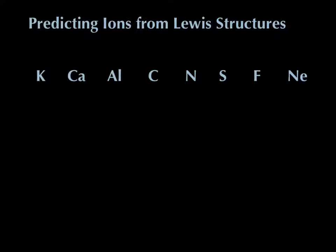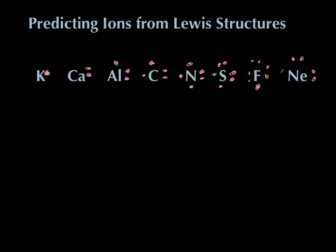Grab a periodic table, hit pause, and draw the Lewis dot structures for each of these elements. Here are the answers: potassium has one dot, calcium has two dots, aluminum in the p block has three dots, carbon has four dots, nitrogen has five dots, sulfur has six dots, fluorine has seven dots, and neon has eight dots all the way around.